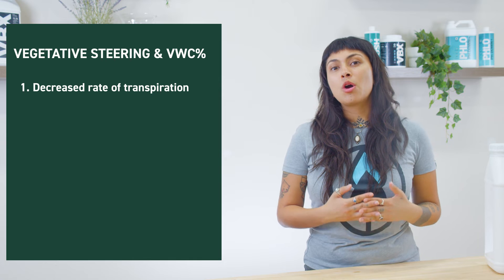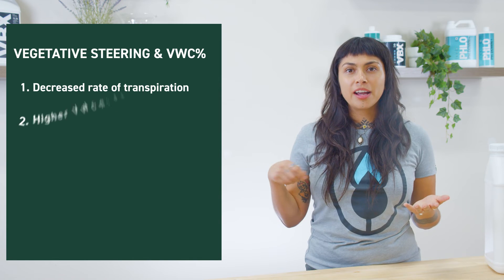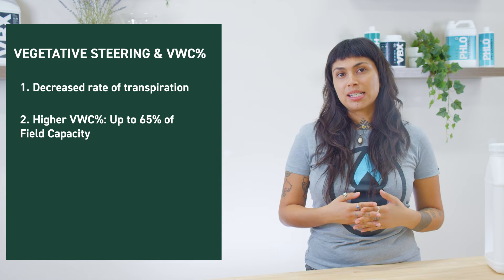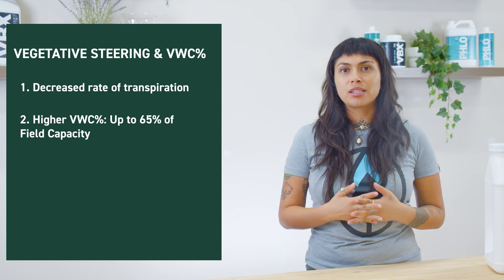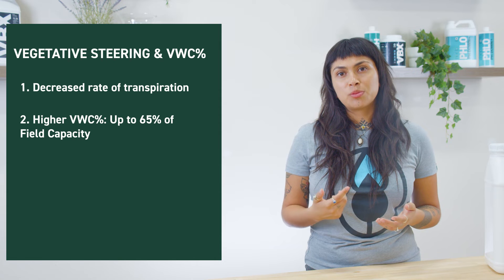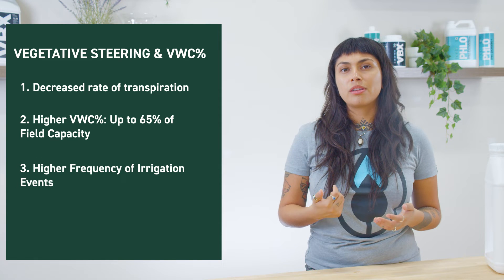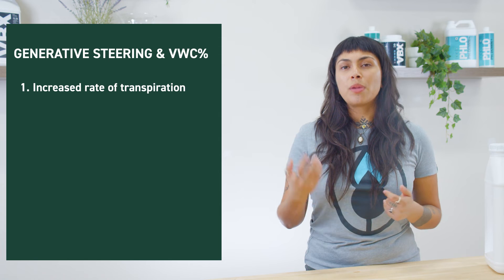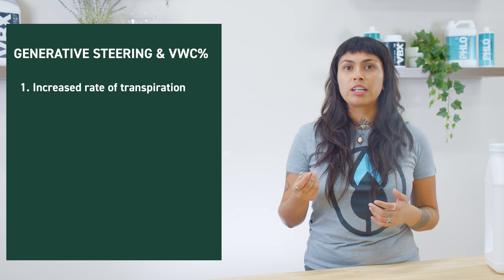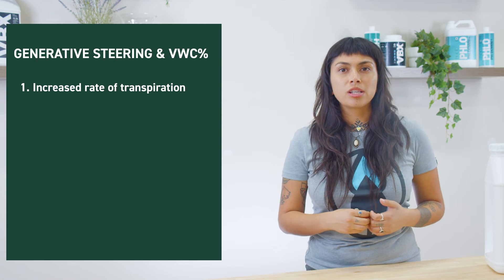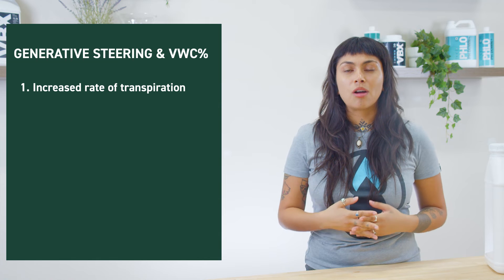We want to consider that while vegetatively steering, we want higher saturation in our substrate, anywhere from 40 to 65% field capacity. To reach this objective in our climate tuned for vegetative steering and a lower rate of transpiration, we want more frequent irrigation events at lower volumes, up to 3% of substrate volume. Alternatively, remembering our environment cues for generative steering and its increased demand for transpiration, we'll adjust our irrigation events to simulate drought conditions.